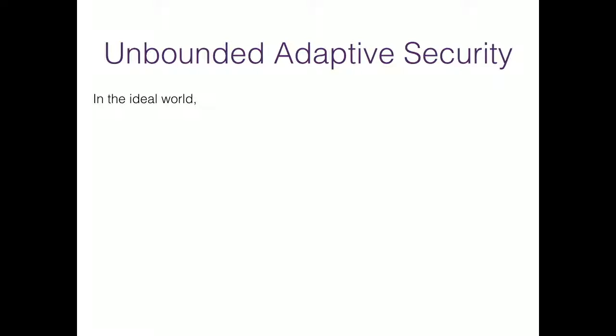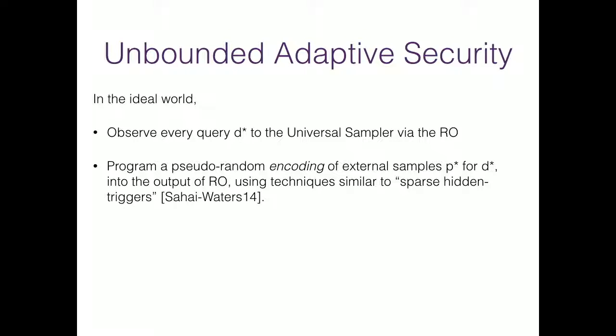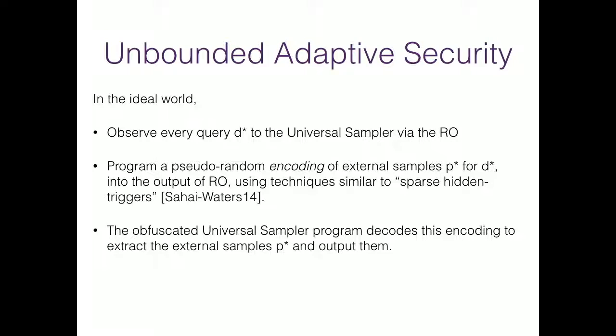In the ideal world, we observe each query that the adversary makes to the universal sampler via the random oracle. Once we observe this query, we program a pseudo-random encoding of the external samples corresponding to this query into the output of the random oracle. This encoding uses techniques similar to those developed in Sahai-Waters for pseudo-random sparse triggers. These sparse triggers then trigger the obfuscated program, which detects this sparse encoding, extracts the parameters inside the encoding, and outputs them. To implement this, we develop a new technique called delayed backdoor programming.